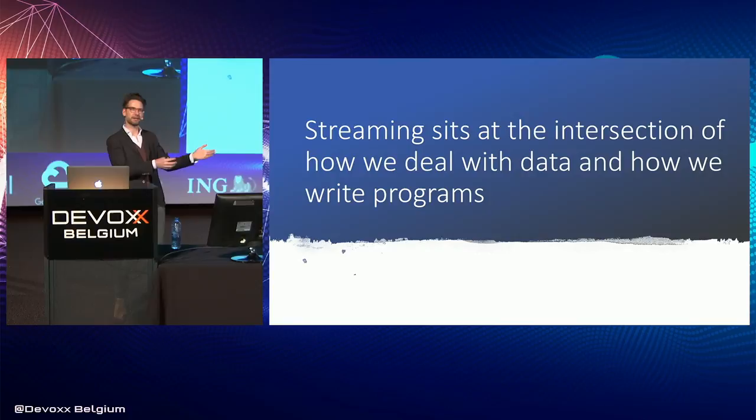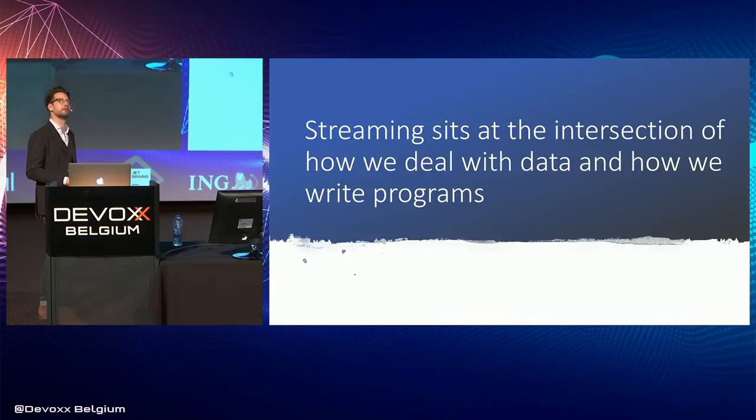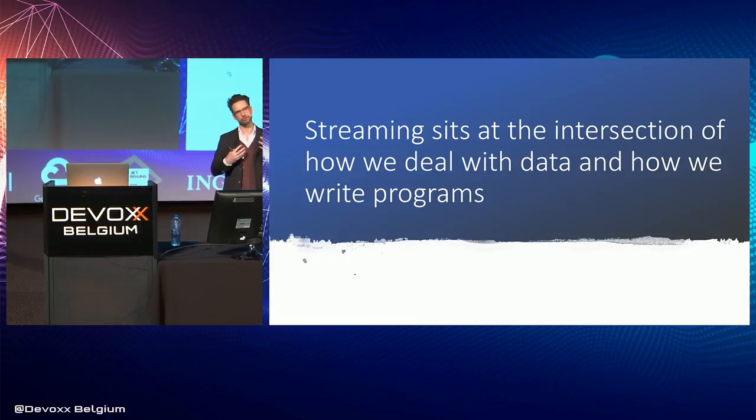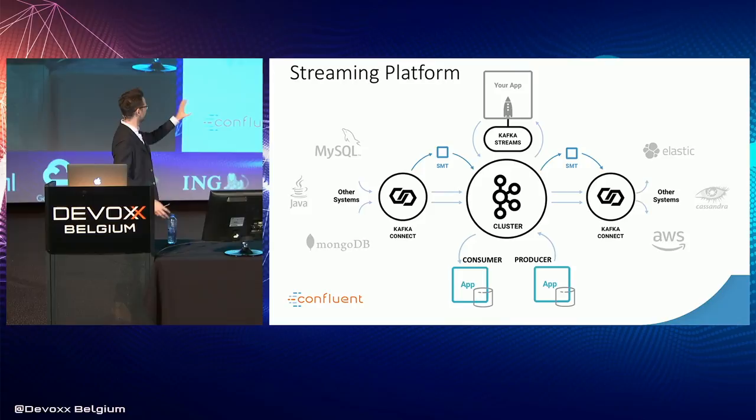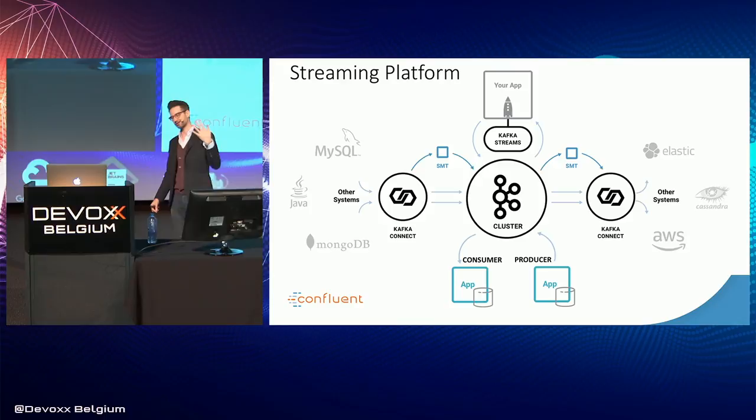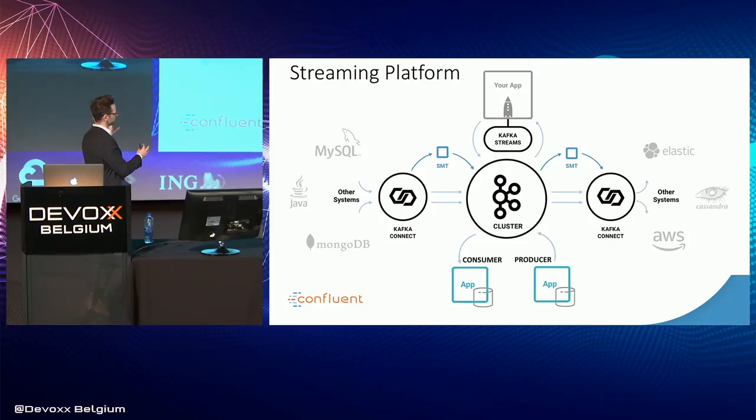Often we'll put our data in a database and we'll have a stateless application there. Where streaming blends these things together by making our data something that's available through a constant stream of events. So at the heart of this is Kafka. At its heart, it's a messaging system — that's the bit in the middle. But there's actually a whole ecosystem. If you download the Apache project, you'll find there are a number of different elements other than just the messaging system.